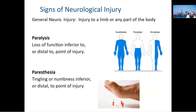Paralysis means can't move — loss of function of that part of the body. The first type is quadriplegia: all four limbs cannot be moved. This is one of the worst spinal cord injuries, usually very high up at C2 or C3. If it doesn't kill them, it can cause quadriplegia — they cannot use their arms or legs.